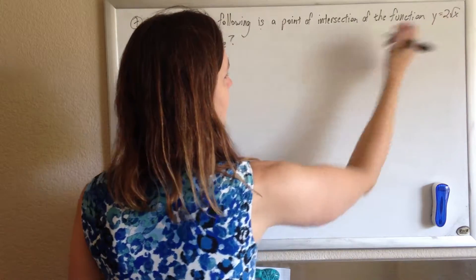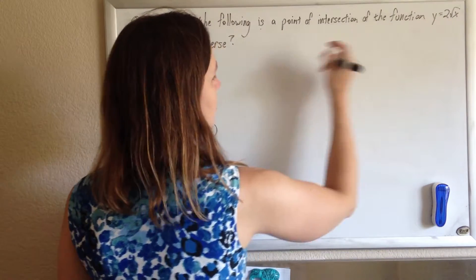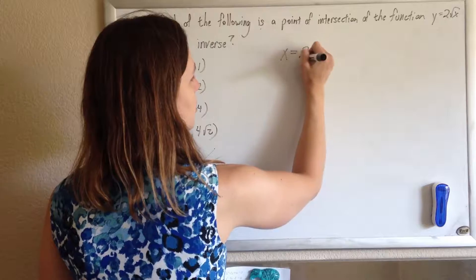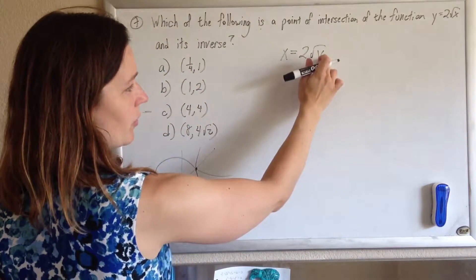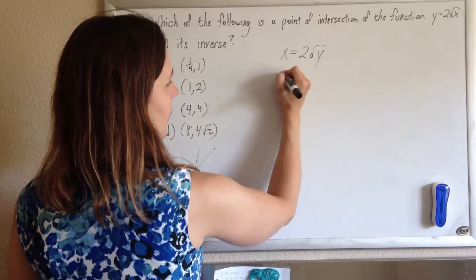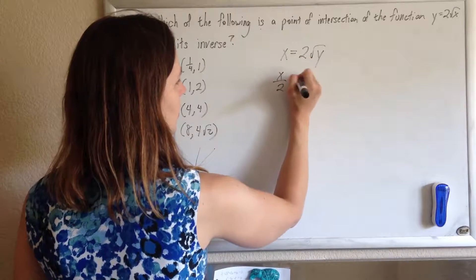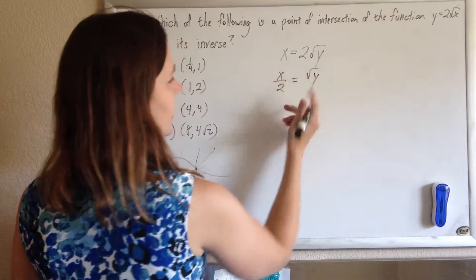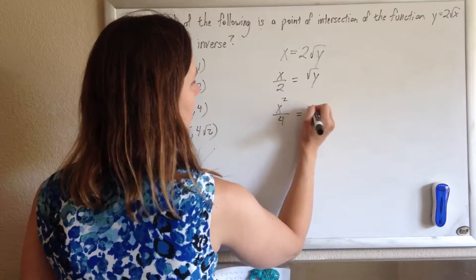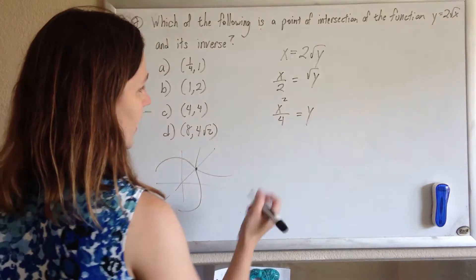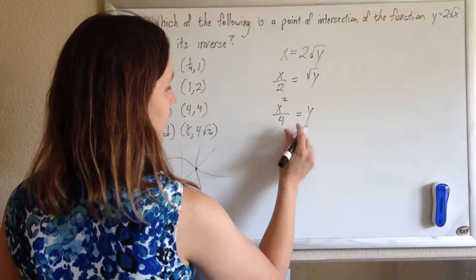You take the x and the y and switch them. So, instead of saying y equals 2 root x, I'll say x equals 2 root y. So, I made the switch, and now I'll solve for y. So, I can divide both sides by 2, and then I can square both sides. So, I'll get x squared over 4 equals y. And so, this is my inverse function.